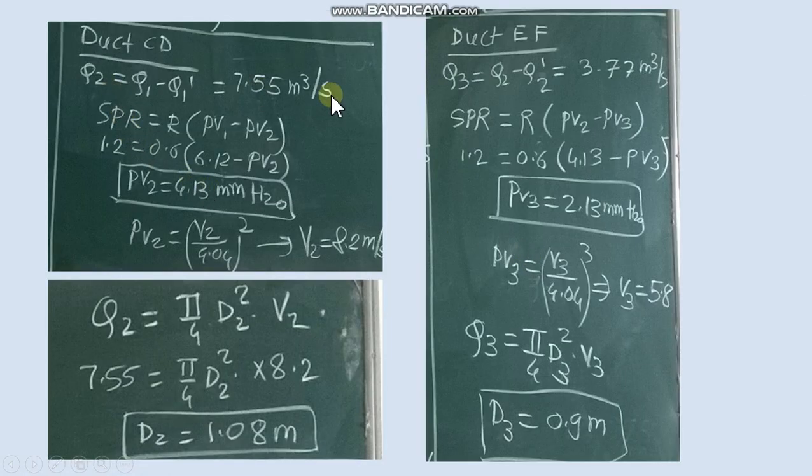So this Q2 value we use to find the diameter. For that V2 is required. This V2 we obtain from SPR formula. SPR is given, dynamic pressure 1 duct is given, PV2 we get from the formula, we get velocity.